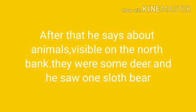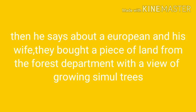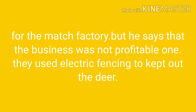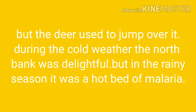He then describes animals visible on the north bank — deer and bear. He also talks about a European couple who bought a piece of land from the forest department with a few growing simul trees for a match factory. According to him, this business was not very profitable, because though they used electric fencing to keep out the deer, the deer used to jump over it.